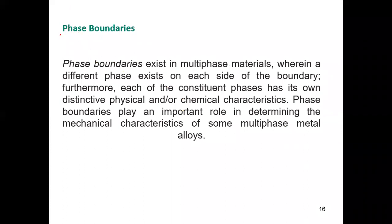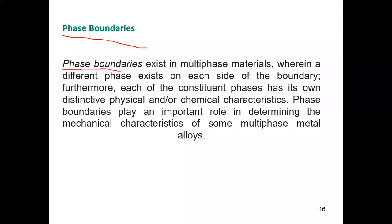Phase boundaries exist in multi-phase materials. In multi-phase materials, there are different chemical phases — for example, Fe₃O₄ can have phases such as FeO or Fe₂O₃.